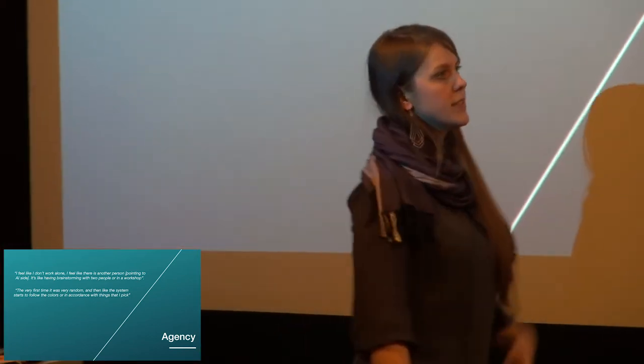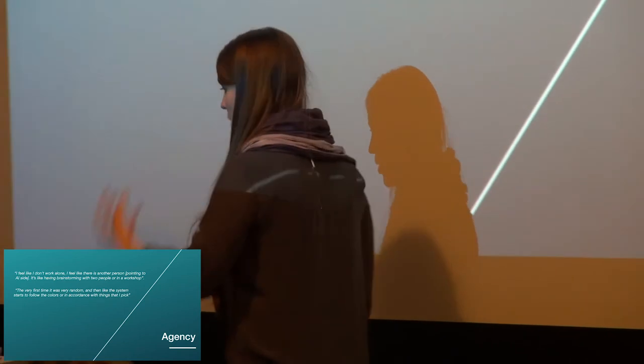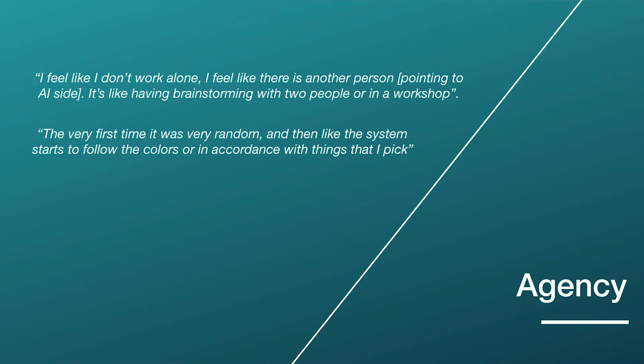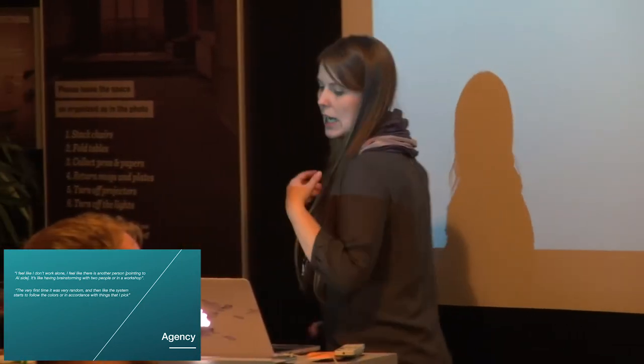Talking about collaborative creativity, we need agency in the system. The system was designed so that one agent works with one designer — one agent presents one image with one description because it's a participant in this process. Most people actually felt that they don't work alone, that they feel like they're brainstorming with two people or creating with more than one person. Some people also noticed that the system starts aligning over time with their understanding and their picks of images in a visual and contextual space.